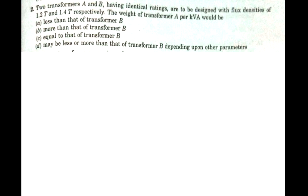In the second question: two transformers A and B having identical ratings are to be designed with flux densities of 1.2 Tesla and 1.4 Tesla respectively. The weight of transformer A per KVA would be: Option A — less than that of transformer B; Option B — more than that of transformer B; Option C — equal to that of transformer B; Option D — may be less or more depending on other parameters.